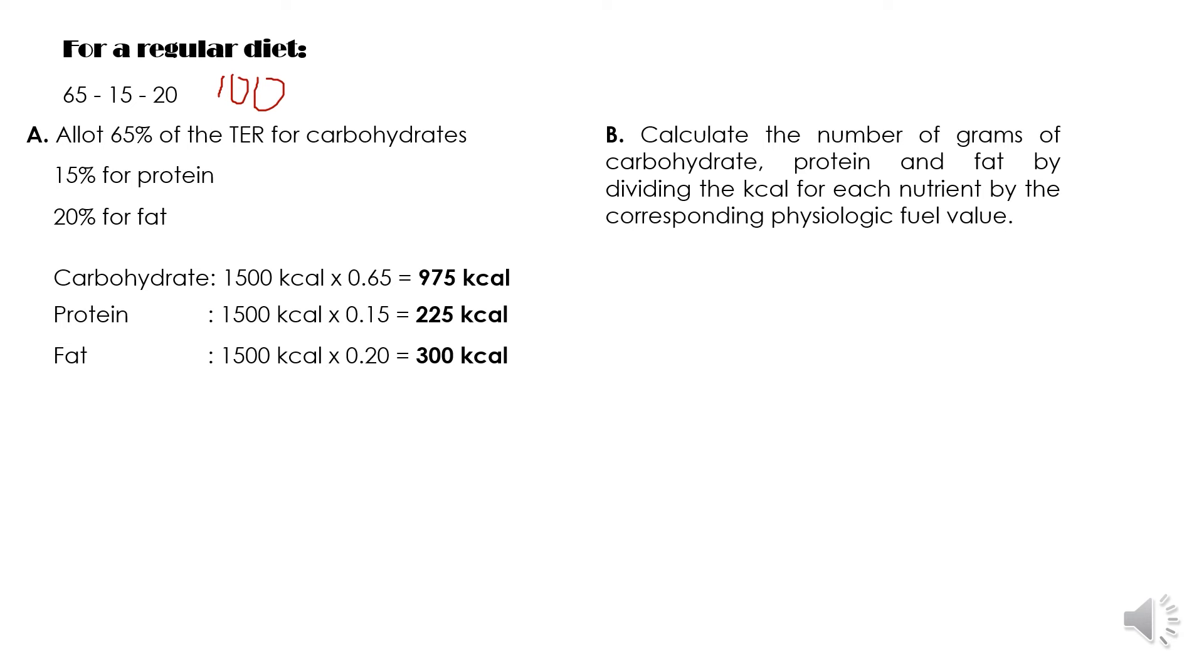Now the next thing that we will do is to calculate the number of grams of carbohydrate, protein and fat by dividing the kcal for each nutrient by the corresponding physiologic value. This is a table for the physiological fuel value per gram.